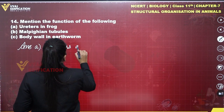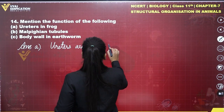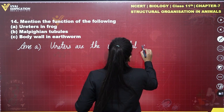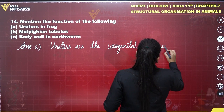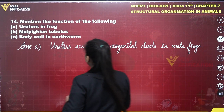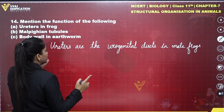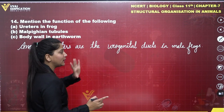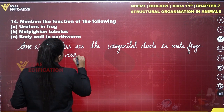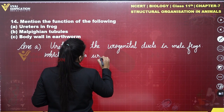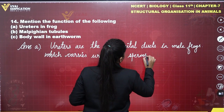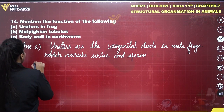Let's write the answer to these questions. Answer (a): the function of ureters — ureters are the urogenital ducts in male frogs; otherwise they carry urine. In male frogs they act as urogenital ducts which carry urine and sperms. This is the function of ureters in frog.